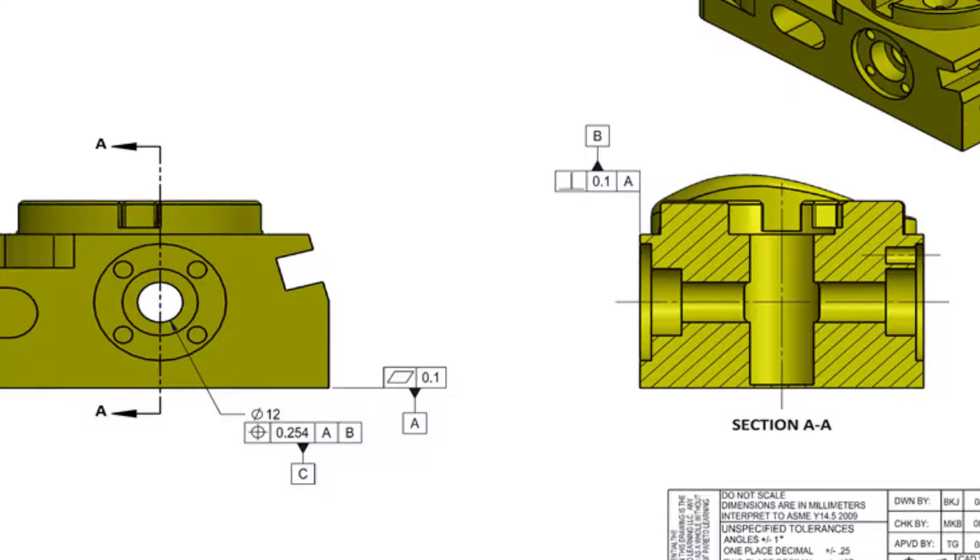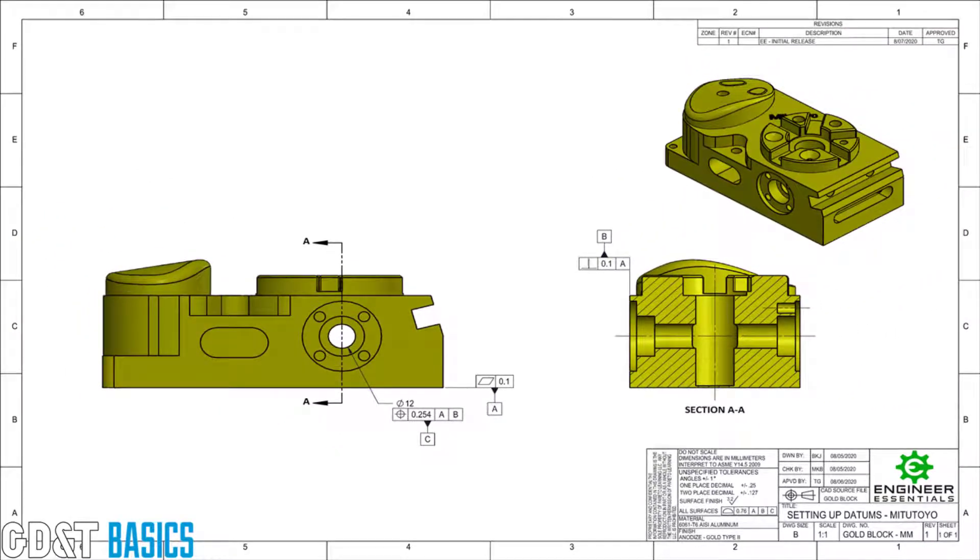Now take a look at the position requirement for C. The primary datum in this DRF, or datum reference frame, is also datum A, and then the secondary one in that DRF is datum B. Going back and taking a look at datum feature A, we see that it has a qualifier on it.